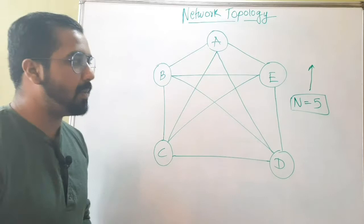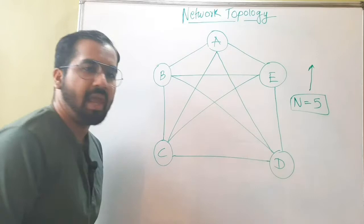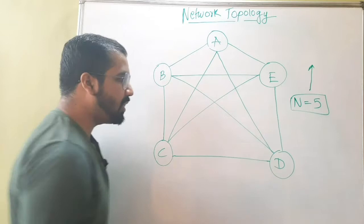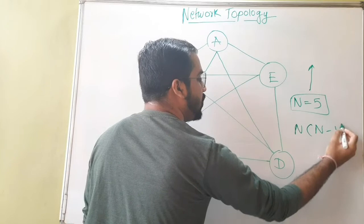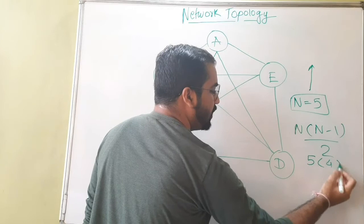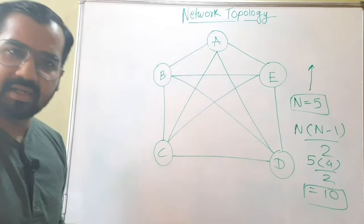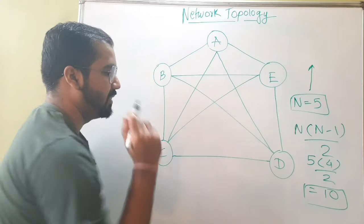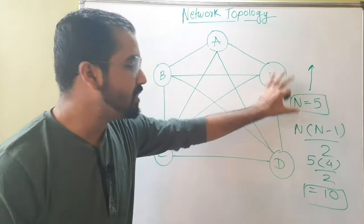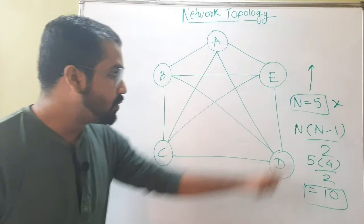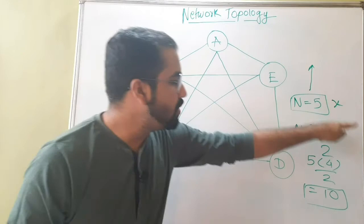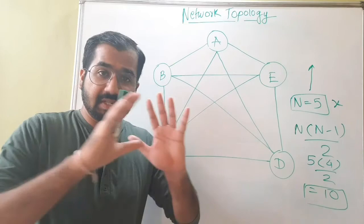To calculate how many links are required, the formula is n(n-1)/2. For n equals 5, that is 5 × 4 / 2 = 10. You can count 10 links in the diagram — 1, 2, 3, 4, 5, 6, 7, 8, 9, 10. So when n is 5, exactly 10 links are required. For any value of n, you can use this formula to calculate the number of links needed.